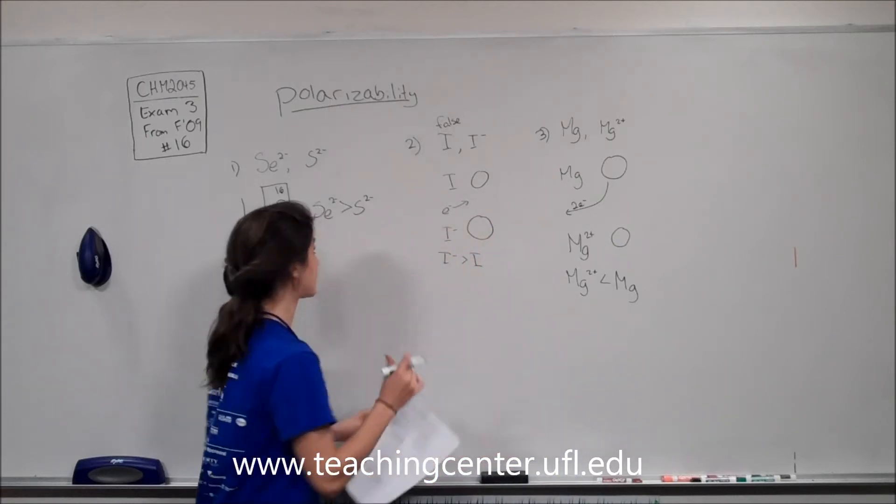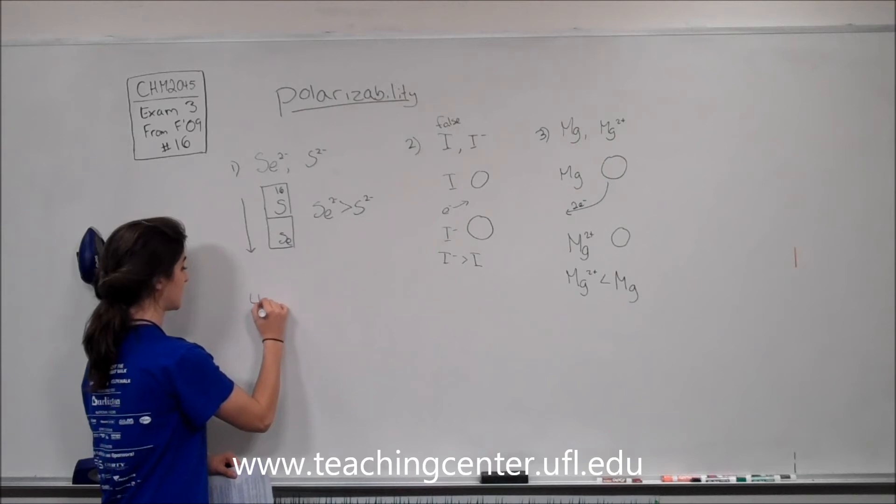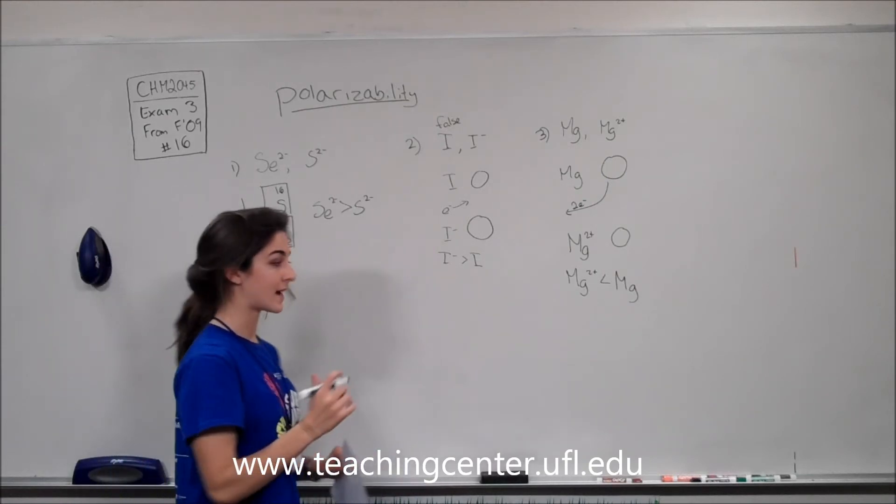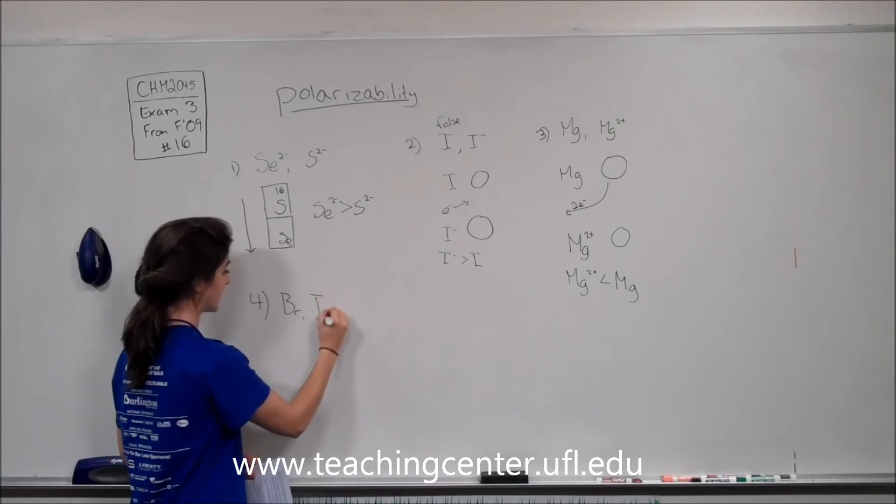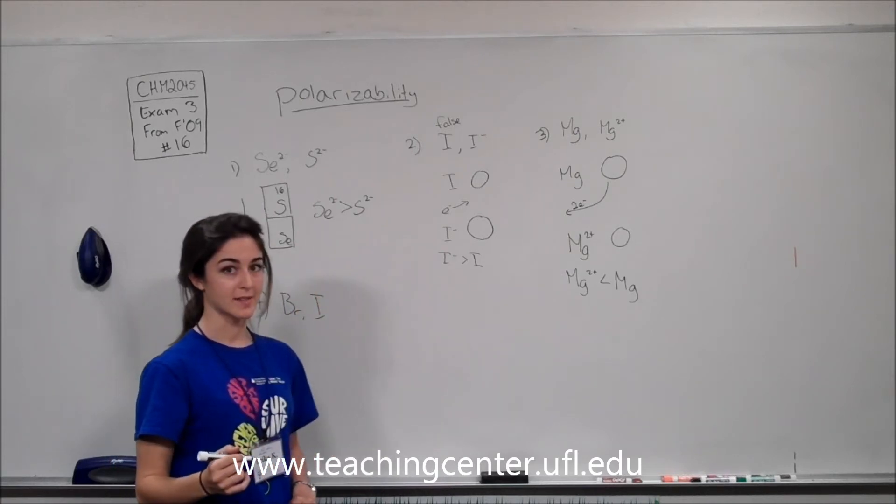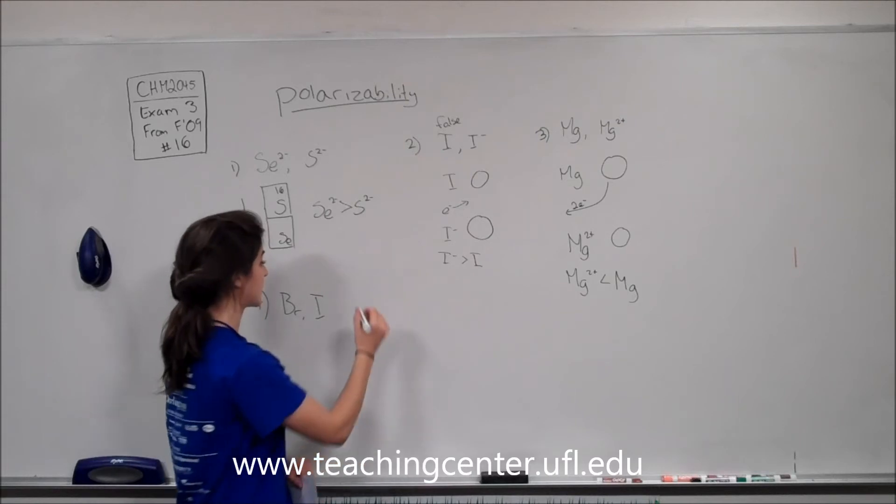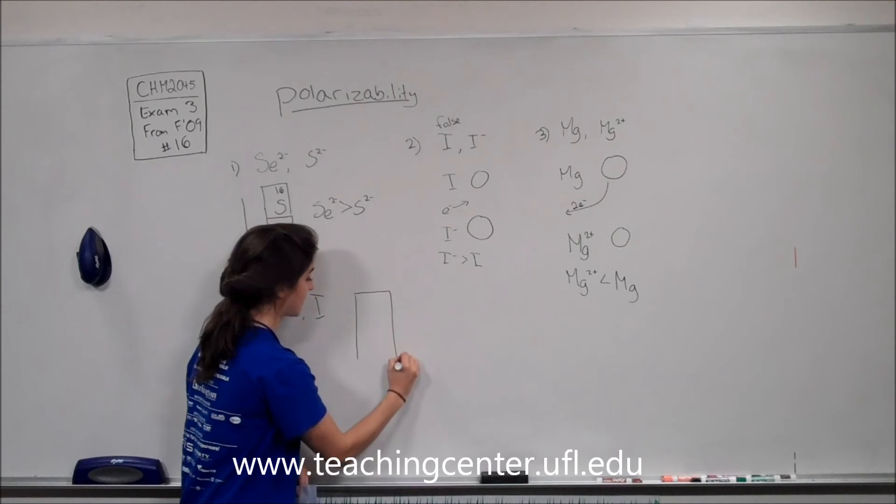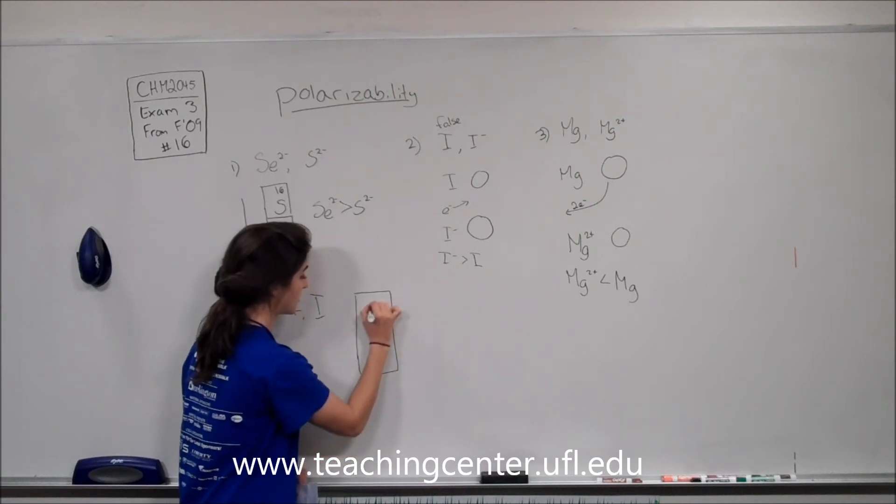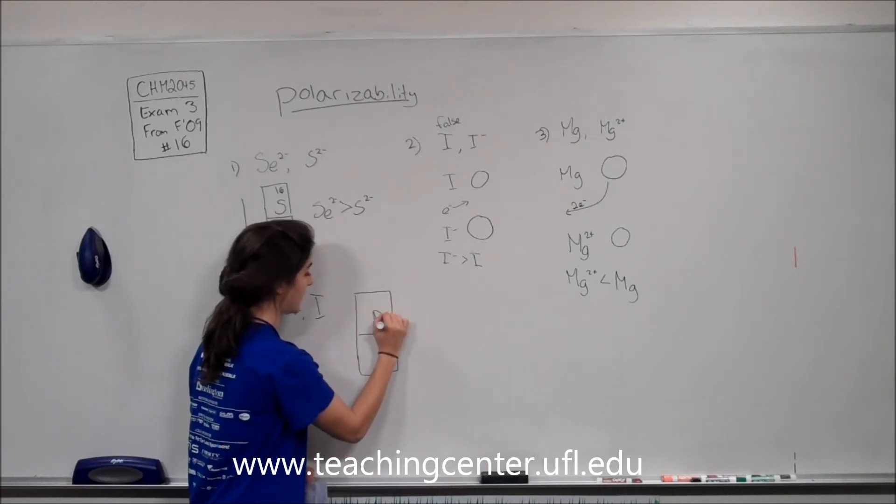So part 4. We have bromine and iodine. Both of these are the ground state neutral charges. So we should probably look at these on the periodic table. And we'll see that we have bromine sitting above iodine.